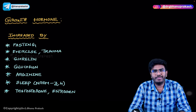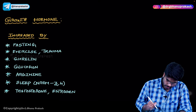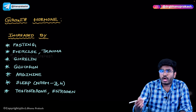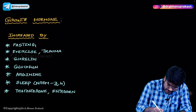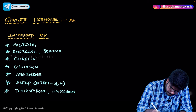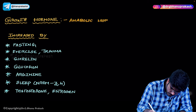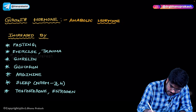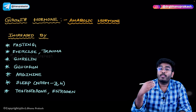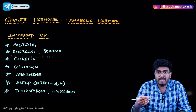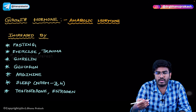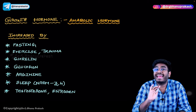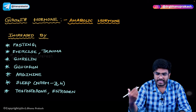Welcome back. Let's discuss growth hormone. First of all, is growth hormone a catabolic hormone or an anabolic hormone? It's an anabolic hormone. We'll discuss in a minute why it's called an anabolic hormone — because it causes proteogenesis and increases the growth of the body.